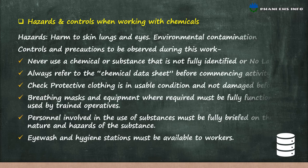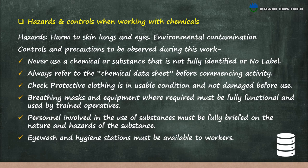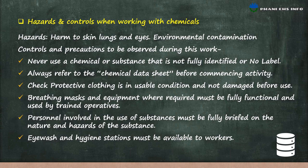Hazards and controls when working with chemicals. Hazards include harm to skin, lungs, eyes and environmental contamination. Controls: never use a chemical or substance that is not fully identified; always refer to the chemical data sheet or MSDS before commencing activity; check that protective clothing is usable, conditioned and not damaged before use; breathing masks and equipment where required must be fully functional and used by trained operatives; persons involved in the use of substances must be fully briefed on the nature and hazard of the substance; and eye wash and hygiene stations must be available to workers.